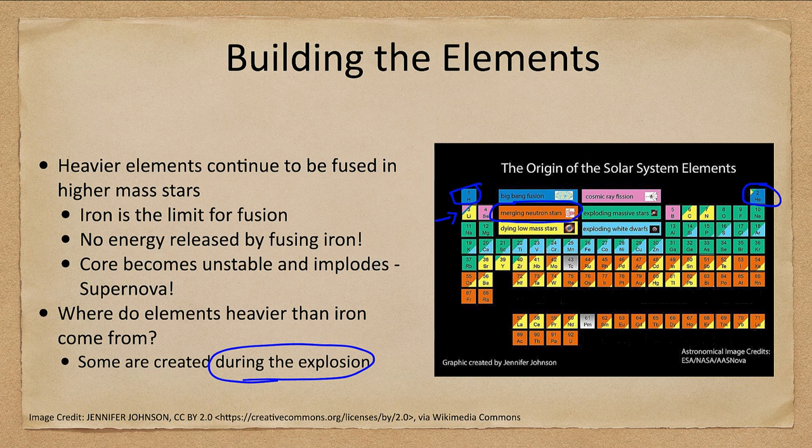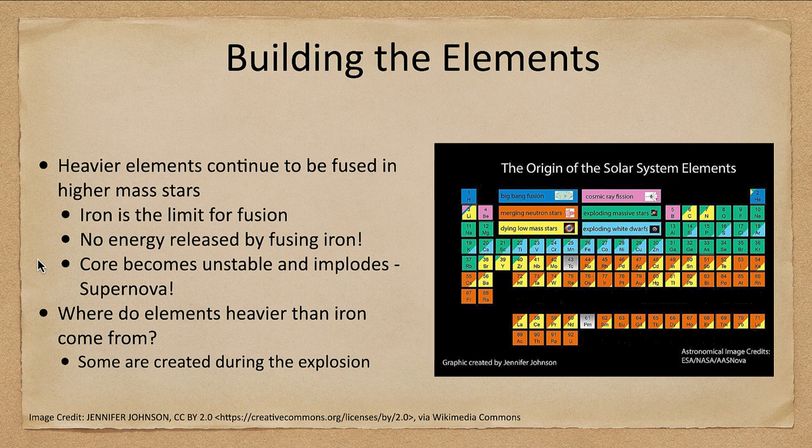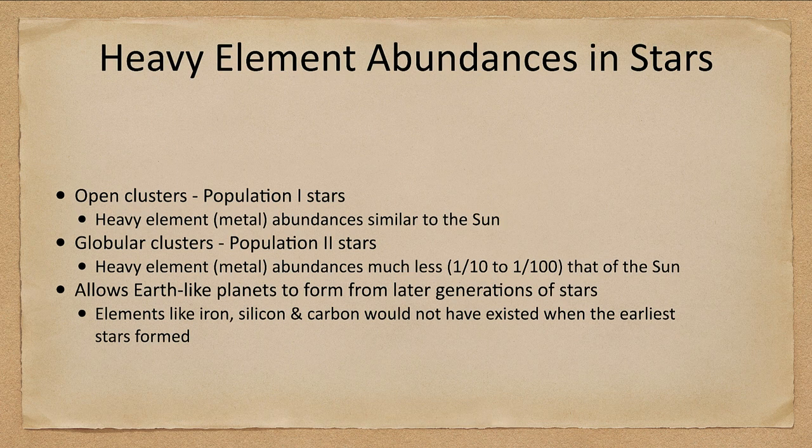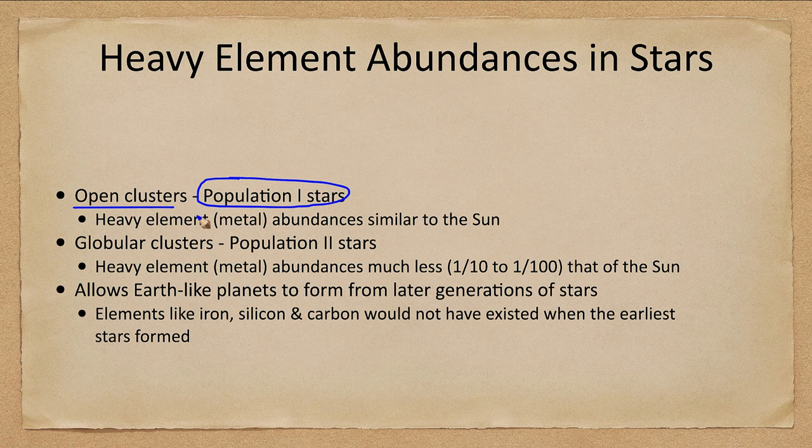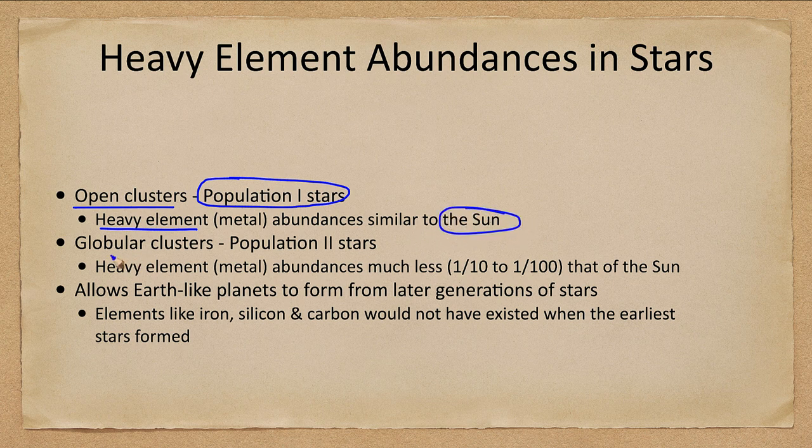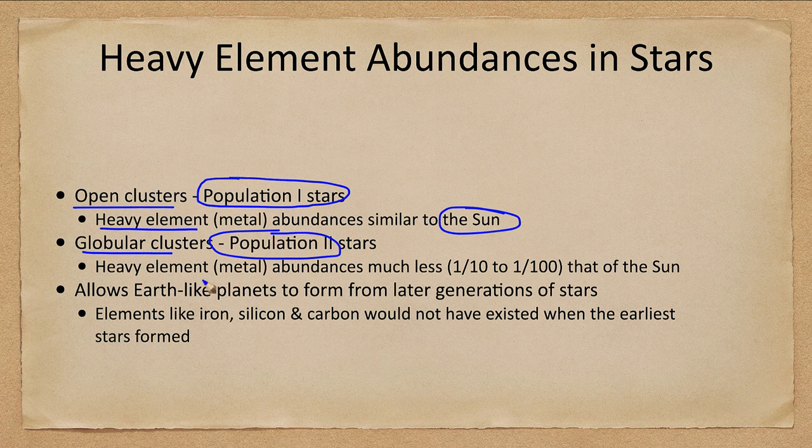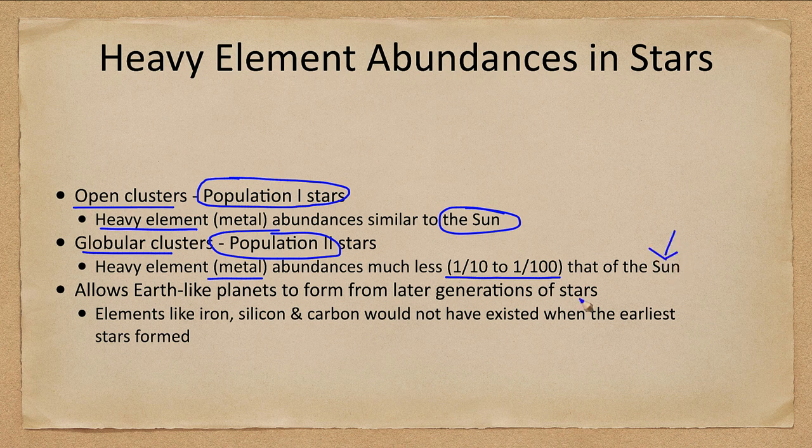Now what do we know about these abundances? Let's take a look at abundances in stars. We have several different types. We have open clusters, what we call population one stars. That is a young population and they have heavy metal abundances comparable to our sun. The globular clusters or population two stars have metal abundances which are much less, one tenth to one one hundredth of what our sun has so they have far fewer metals.